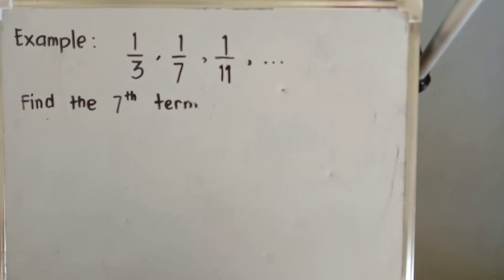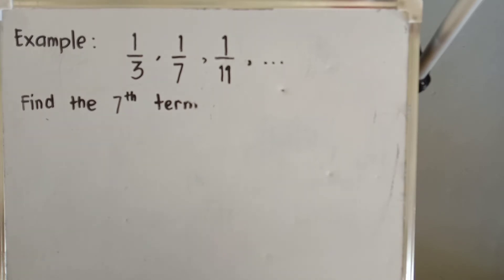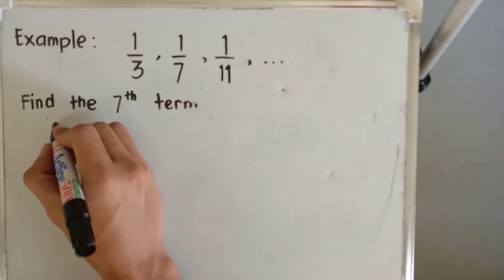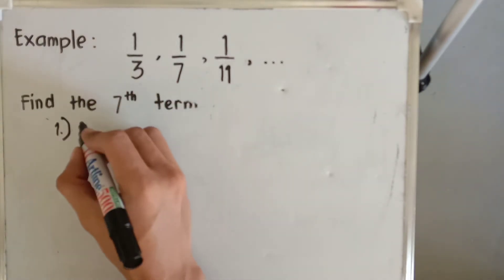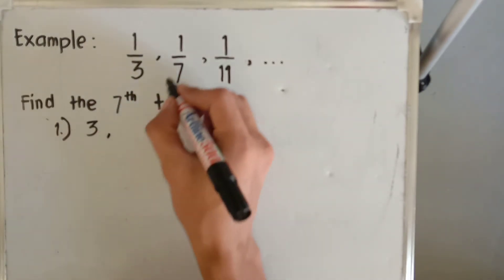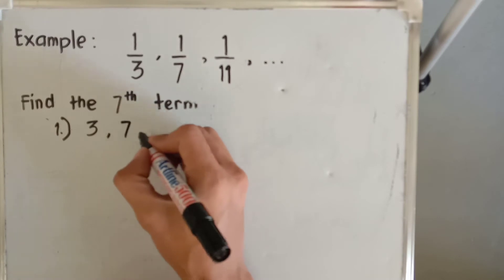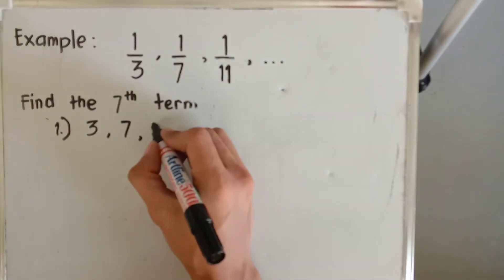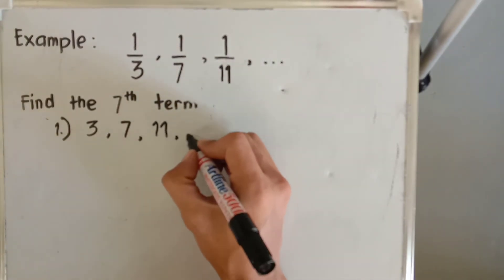Let's try the third example: one-third, one over seven, one over eleven, and so on. Let's find the seventh term of the given sequence. The very first thing to do is to always get the reciprocal of each term. So the reciprocal of one-third is three, one over seven is seven, and one over eleven is eleven, and so on.